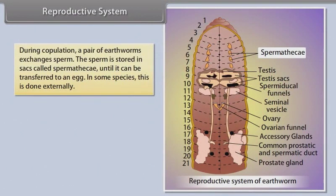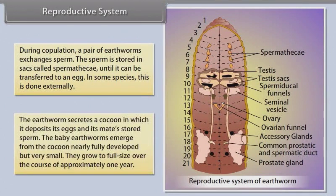During copulation, a pair of earthworms exchanges sperm. The sperm is stored in sacs called spermathecae until it can be transferred to an egg. In some species, this is done externally. The earthworm secretes a cocoon in which it deposits its eggs and its mate's stored sperm. The baby earthworms emerge from the cocoon nearly fully developed but very small, and they grow to full size over the course of approximately one year.